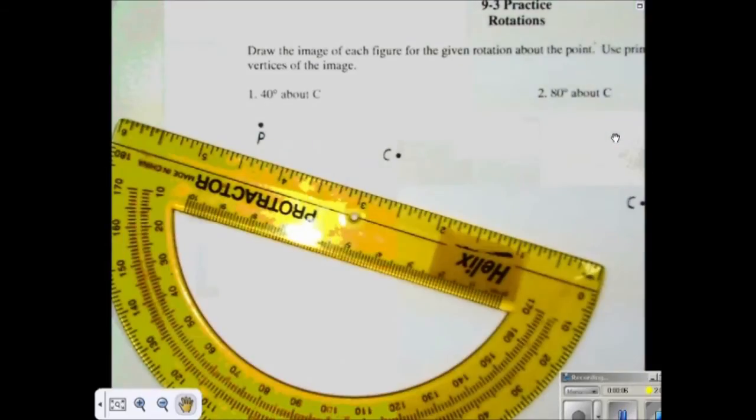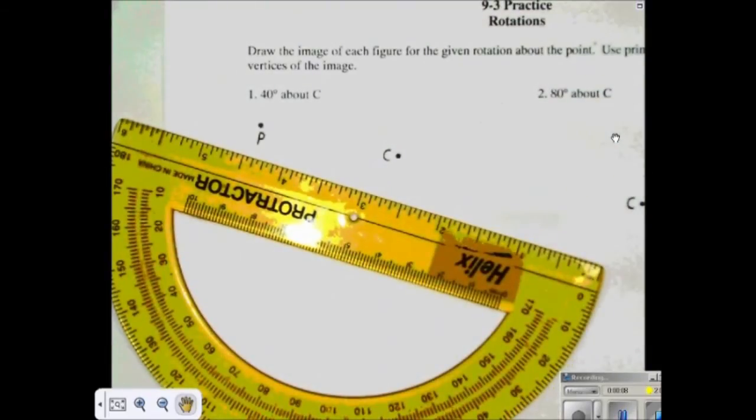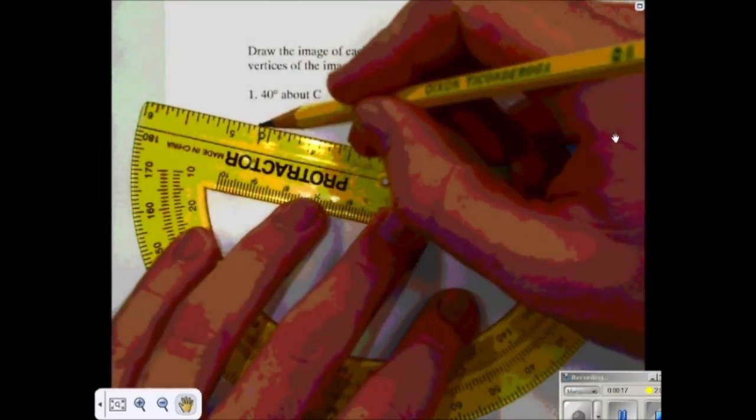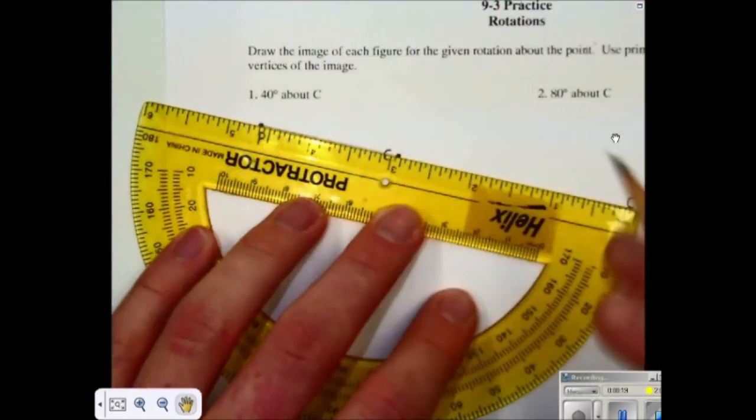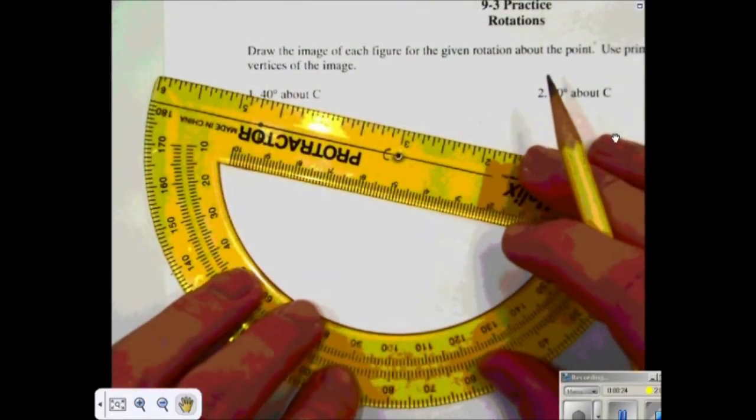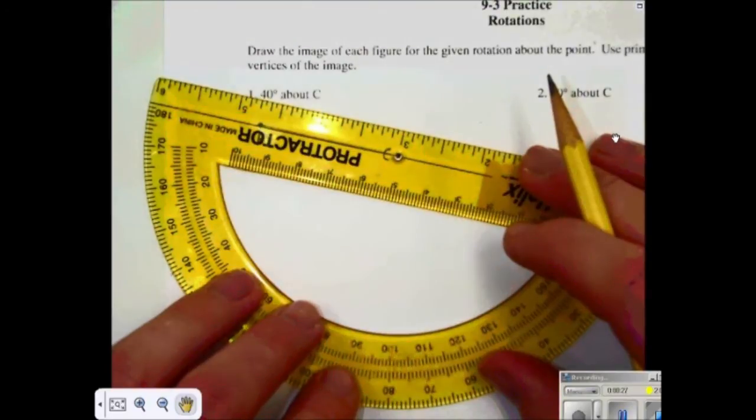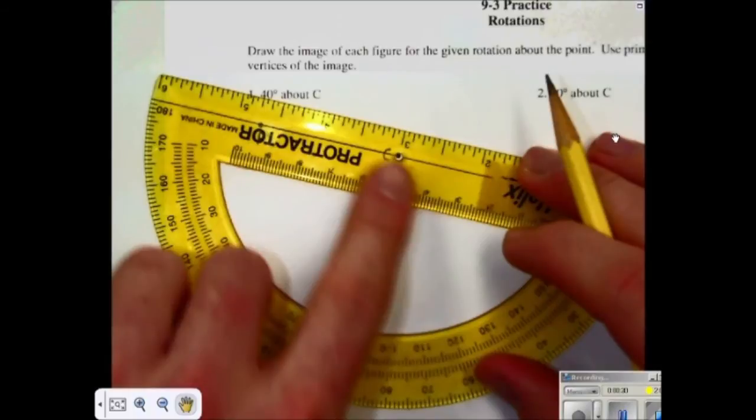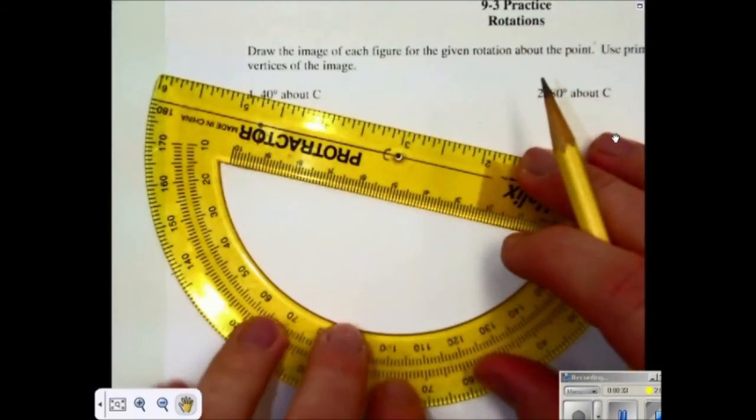And I'm going to rotate point P about C, where the center is C. And number one, I'll go 40 degrees. I will first draw a line between point P and C. Help me with my angle. And then I will measure 40 degrees. So I'll put the point C in the center of my protractor. And I'll make sure that point P lines up on this line.